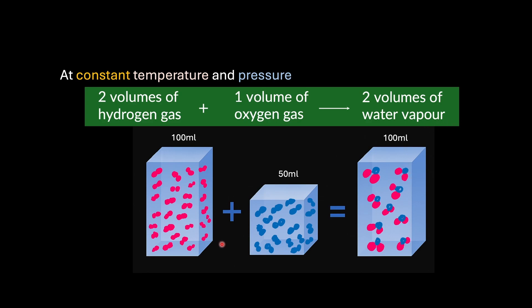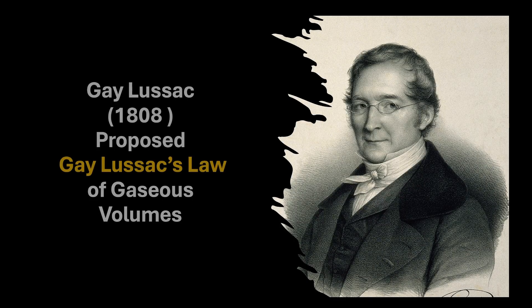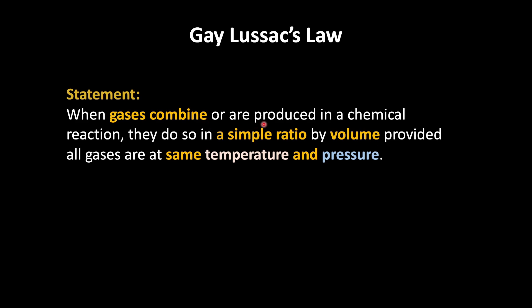For example, if I have 100 ml of hydrogen gas, it would react with 50 ml of oxygen gas to form 100 ml of water vapour. And this was what Gay-Lussac observed too — that the reactants and products reacted and combined in simple whole number ratio, which we now know as Gay-Lussac's law of gaseous volumes, proposed in 1808.